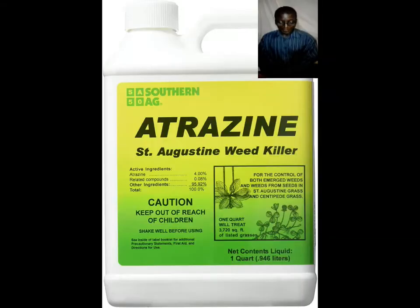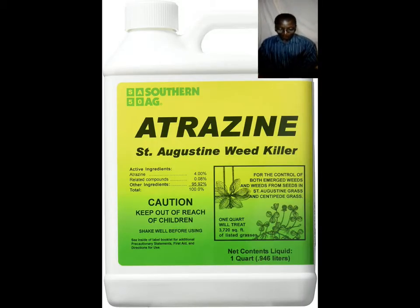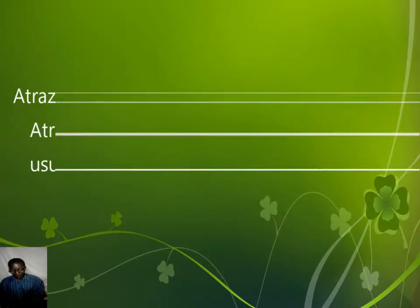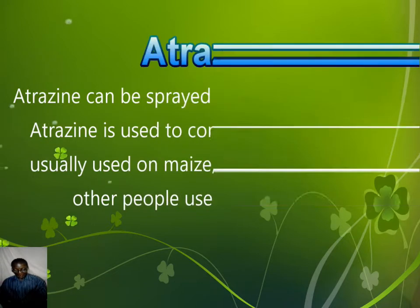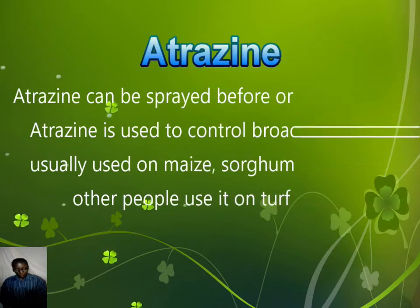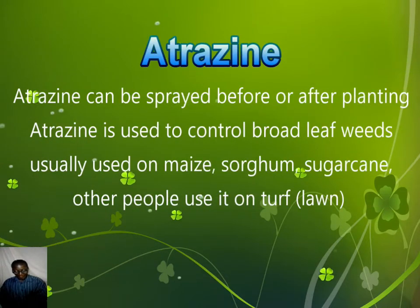Today we are going to look at Atrazine, which is part of the family of herbicides that we use here in Zimbabwe. The herbicide is used before and after planting to control broadleaf and some grass weeds.